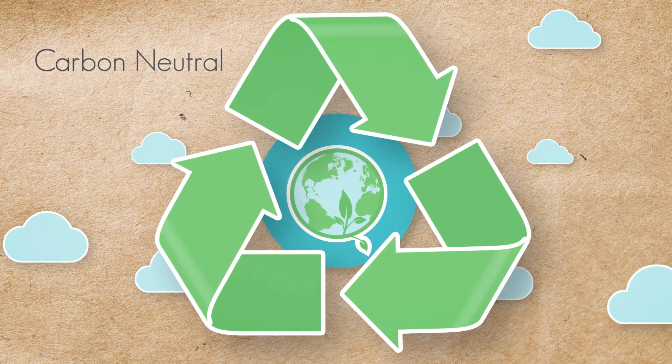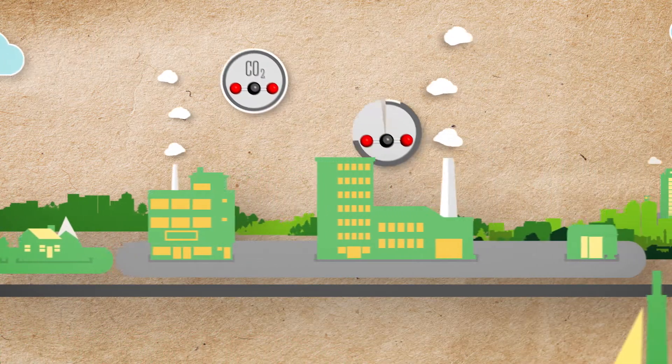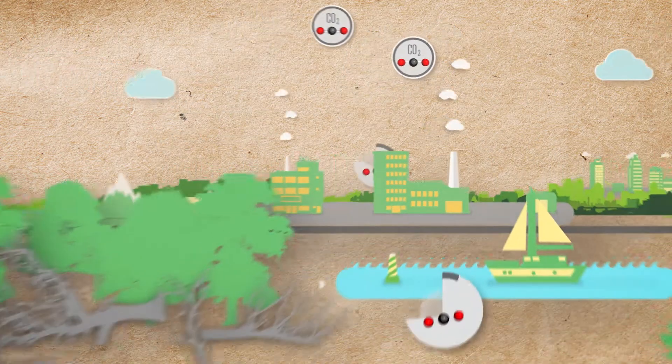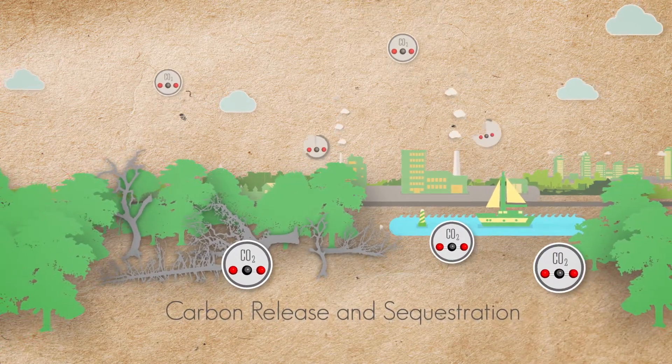But what does carbon neutral mean? You see, CO2 from organic renewable sources such as woody biomass is part of a sustainable cycle of carbon release and sequestration.